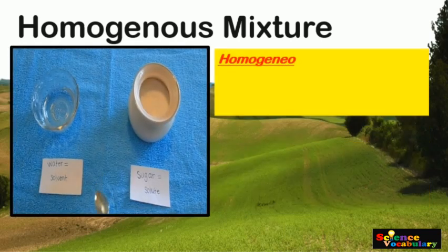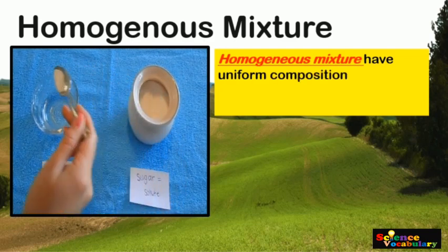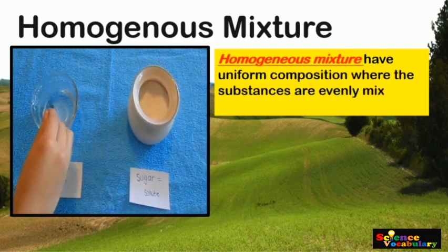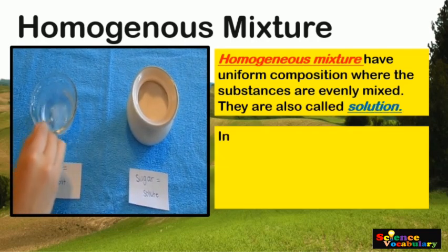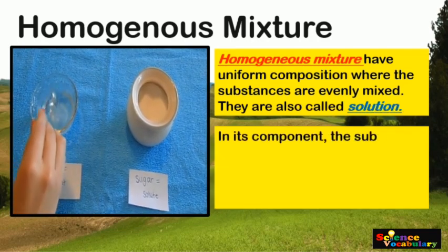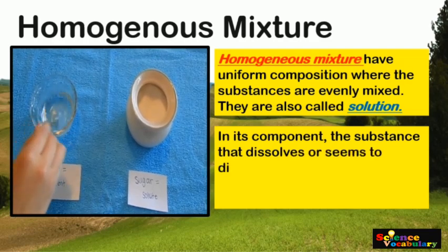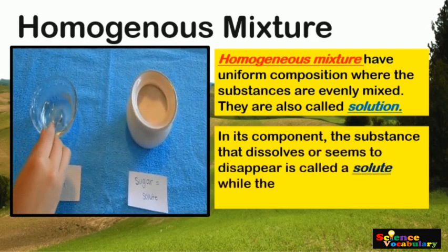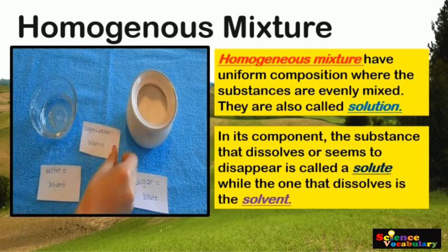Homogeneous Mixtures have uniform composition where the substances are evenly mixed. They are also called a Solution. In its components, the substance that dissolves or seems to disappear is called the solute, while the one that dissolves the other is the solvent.